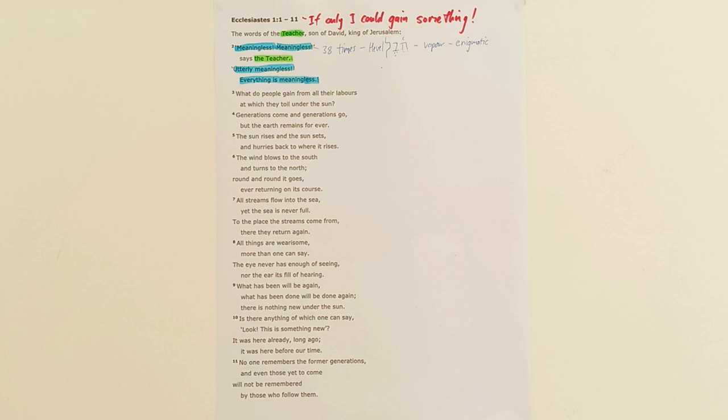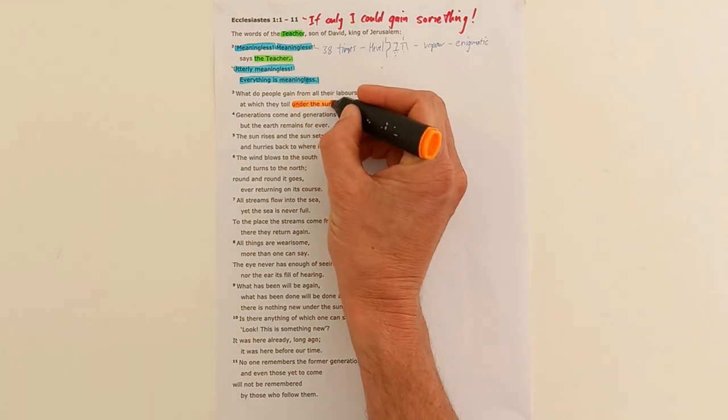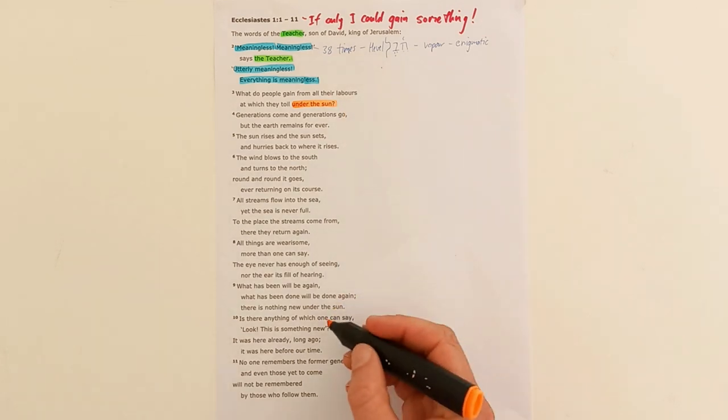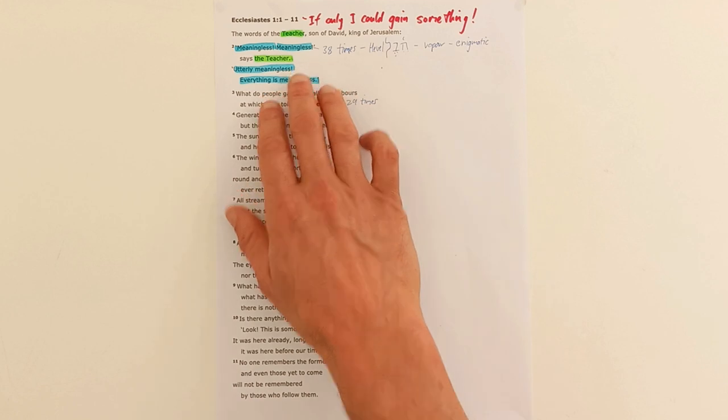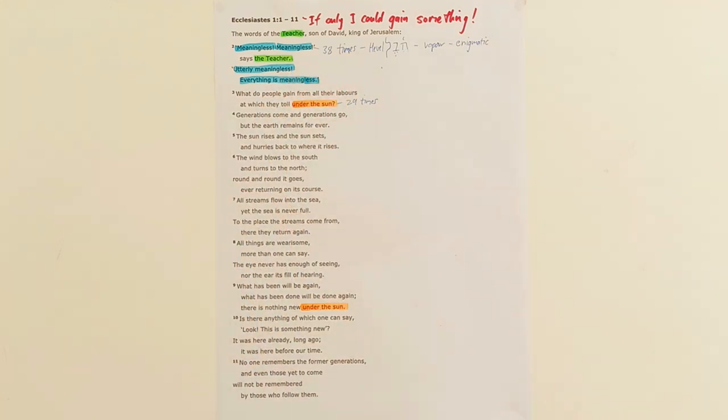This repeated idea of being under the sun is also one that comes many times in the book of Ecclesiastes. 29 times we are told about life under the sun, toil under the sun, labor under the sun. This is life from the perspective of this world, a horizontal perspective of life. As he observes this life under the sun, he's saying it is enigmatic, it's hard to get your head around the big overall purpose for life under the sun.